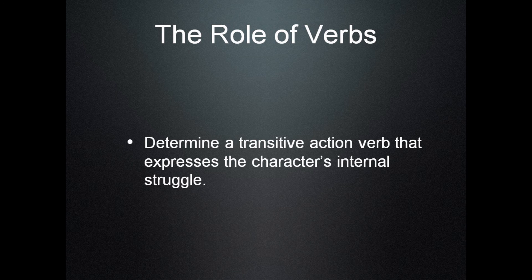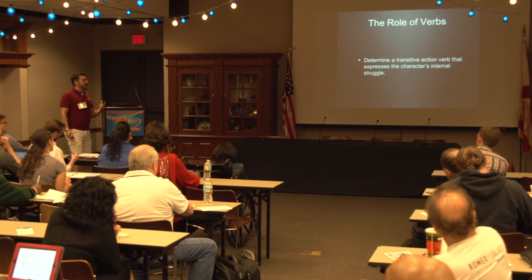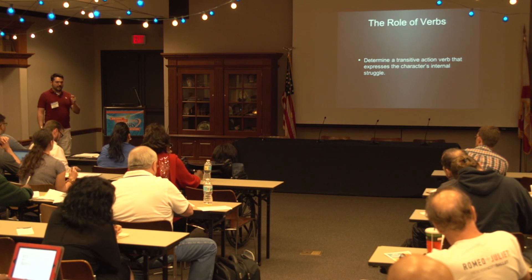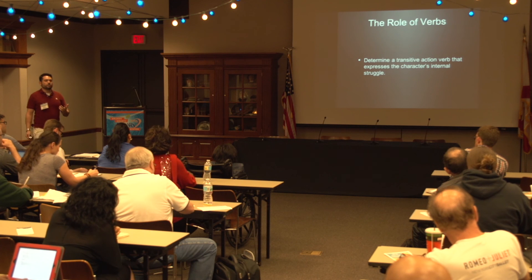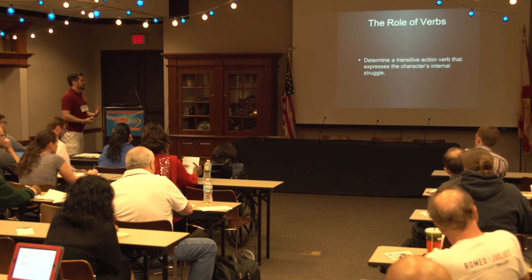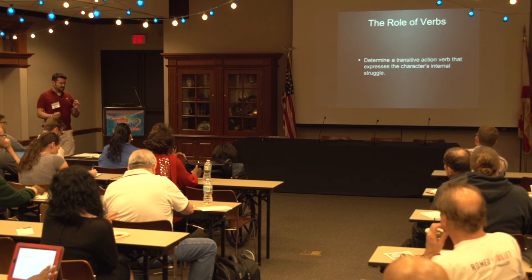Similarly with verbs — when revising, not during a first draft, I like to determine a transitive action verb that expresses the character's internal struggle as well. So we have the external goal, which might be to attack, but we can also look at whether there's anything else going on. This operates as a checklist: it ensures the line has intention and is conveying what I want, while also making the most out of the words on the page. Especially in stage plays and screenplays, economy of language is extremely important — every single line has to convey as much meaning as possible.